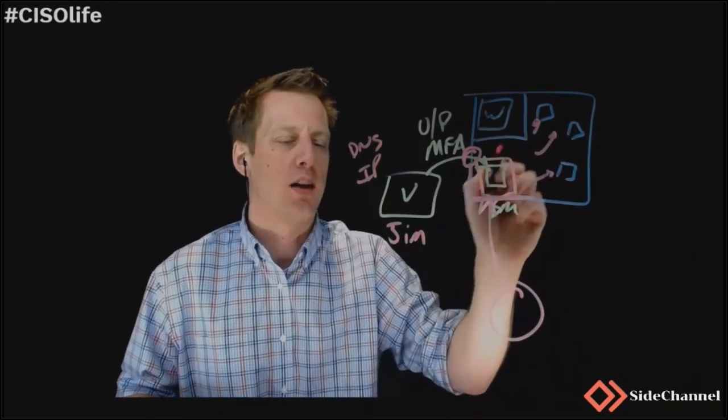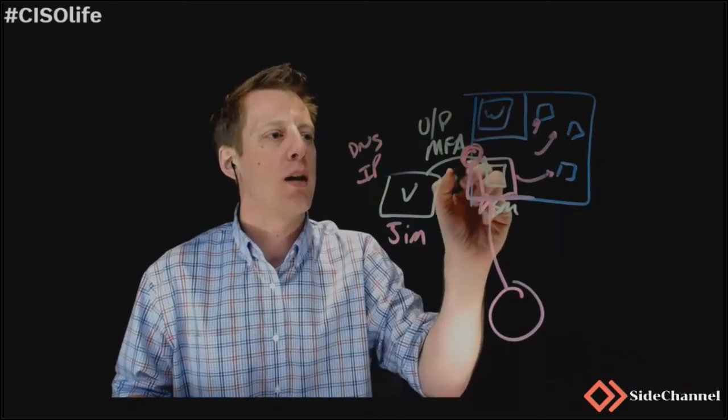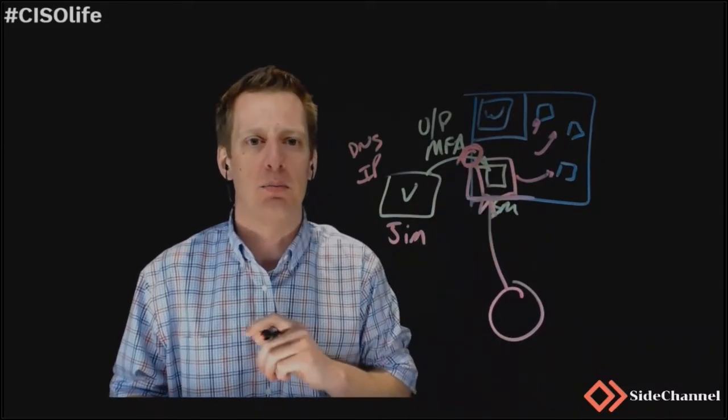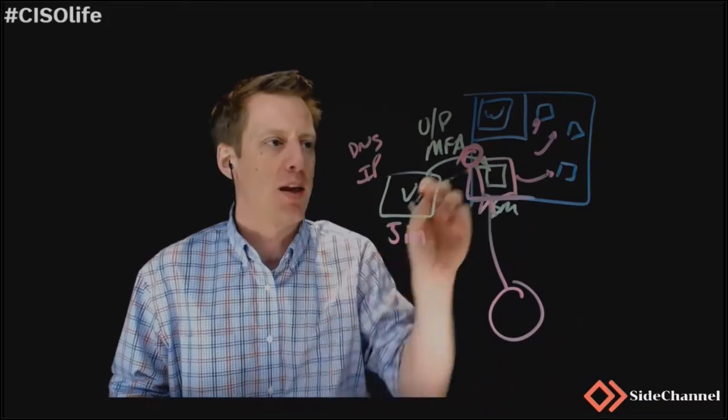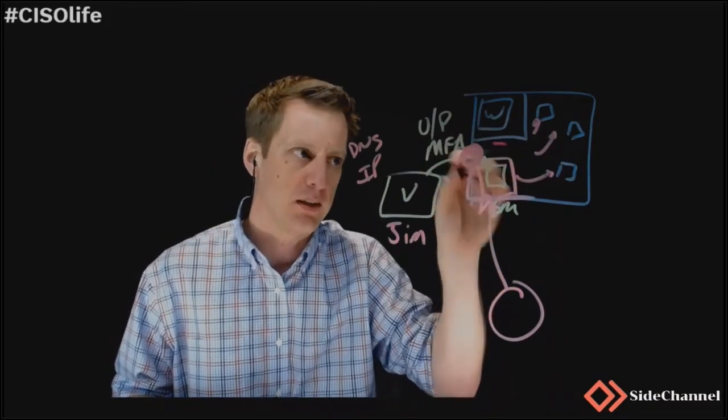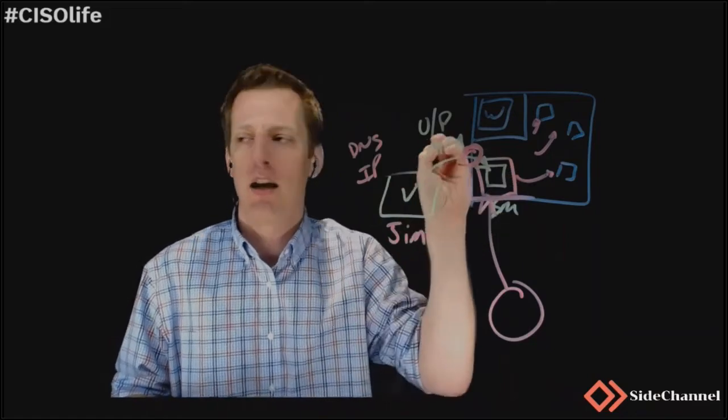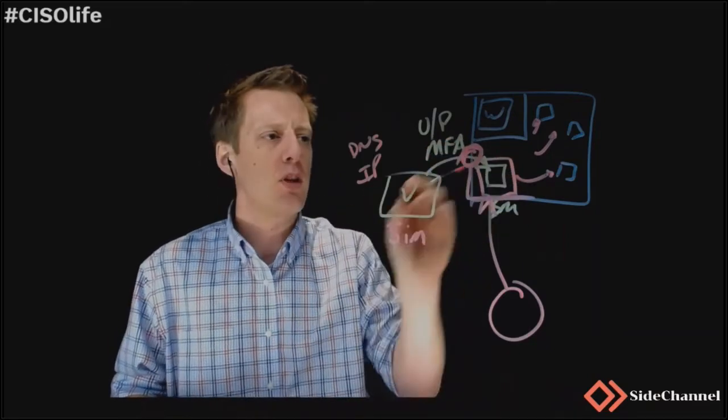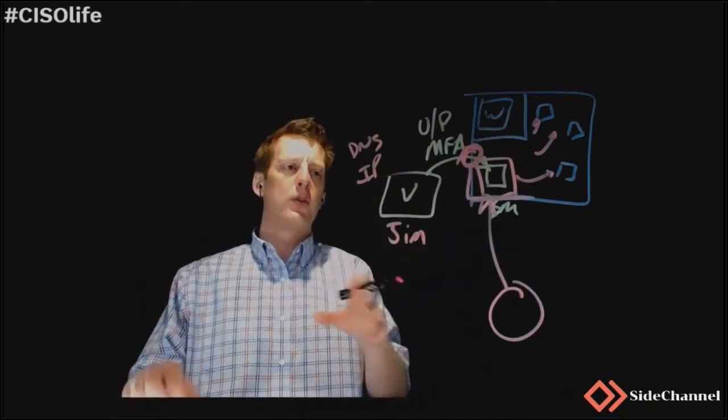So when suddenly Jim's account is used and now Jim's account is starting to work its way around the infrastructure, trying to talk to HR, trying to talk to whatever, you've got a management or monitoring capability that can look for that abnormality or that possibly malicious activity, and you can effectively start some type of incident response and shut that down.